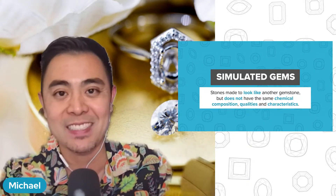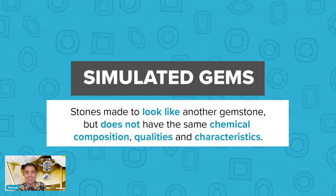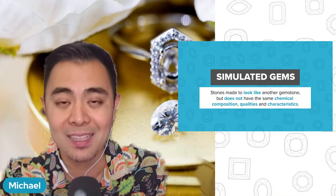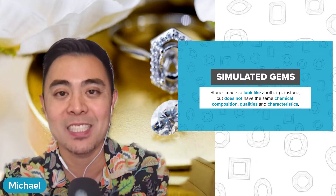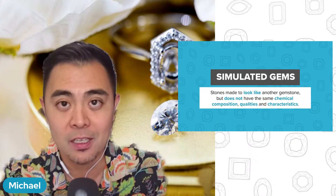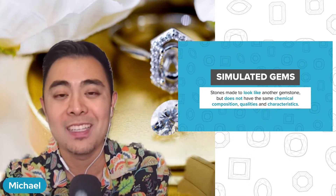What is the difference between a simulated gem versus a synthetic gem? A simulated gem are stones made to look like another gemstone, but do not have the same chemical composition, qualities, and characteristics. The difference between a simulated gem versus a natural gemstone is that it is made to look like it, but it is not it in any physical form or anything at all. The only similarity are the looks, whereas the chemical composition, the physical attributes, the refractive index, and all that is all different.